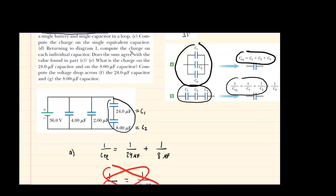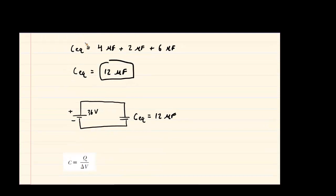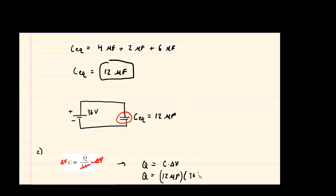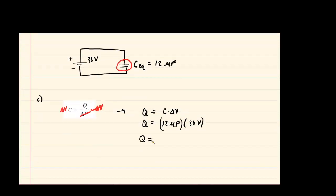In part C it says to compute the charge on the single equivalent capacitor. We have the equation that relates charge to capacitance and potential difference. Solving for charge by multiplying both sides by potential difference, we get Q equals capacitance times potential difference. Taking the capacitance of 12 microfarads and multiplying by 36 volts gives 432. Since we used microfarads, the unit is microcoulombs — that's the correct answer to part C.